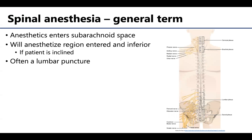Let's start with spinal anesthesia. Sometimes you hear this referred to as a spinal block, and this is a general term for anesthetics entering the subarachnoid space. Recall, the subarachnoid space is that space between the arachnoid and the pia mater. This will anesthetize the region in which the anesthetic is entered and inferiorly, as anesthetic agents tend to be heavier than cerebrospinal fluid. So while the patient is inclined, it will keep the anesthetics in the inferior subarachnoid space. So say the anesthesia is entered here, it will anesthetize the nervous tissue at this red line and inferior.